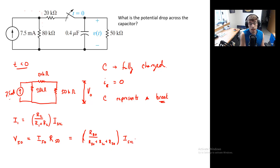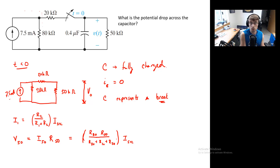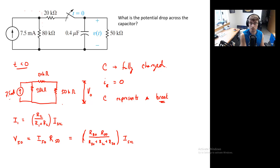Multiplied by the 50 kilohm resistor. This is actually equal to the initial potential across the capacitor — right at time equals zero, this is the potential drop across that capacitor. Let's plug in numbers. We have 80 times 50, which is 4000. And then we have 170 down in the denominator — oh, excuse me, this is a 50, so that's 150. And then 7.5 milliamps.